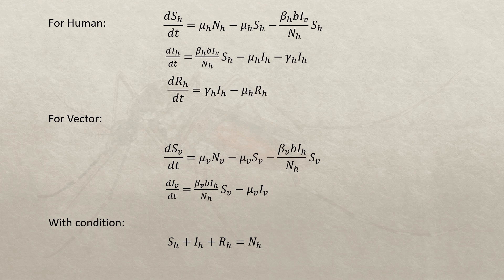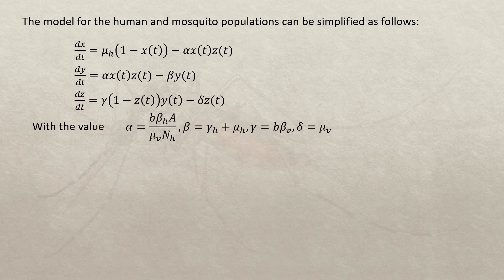We take the first two and the last equation and normalize them. The model for the human and mosquito populations can be simplified as follows: the first two are the human population differential equations, and the last one is the mosquito population differential equation. After normalizing with the values of alpha, beta, gamma, and delta, we obtain this simplified system.